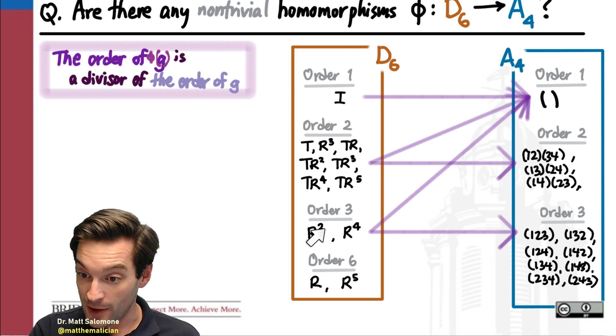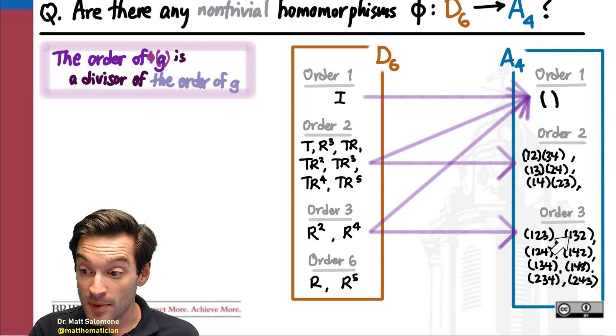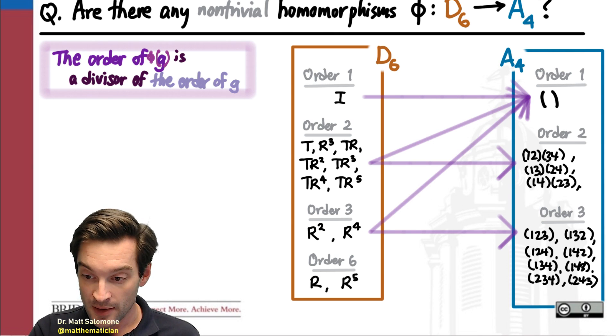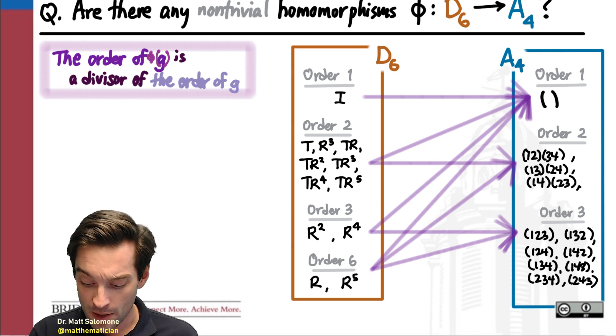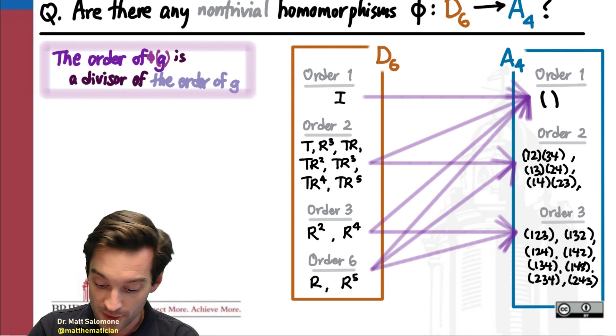For the same reason, my order 3 elements can only either be sent to the identity, or they can be sent to elements of order 3. And my order 6 elements, well, those can go anywhere, right? Because their image could have order 1, it could have order 2, it could have order 3.